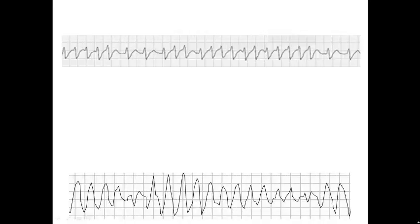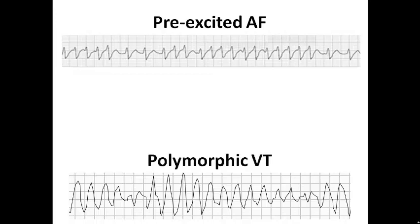So if we have this example: the top ECG is pre-excited AF — the complex morphology may be variable but shows only two or three morphologies, the axis is nearly the same, there are some very short RR intervals, and it is extremely irregular. In the other example, there is continuous change in axis, so it is polymorphic VT, most probably on top of a long QT interval presenting as torsade de pointes, as change in axis is not a feature of pre-excited AF.